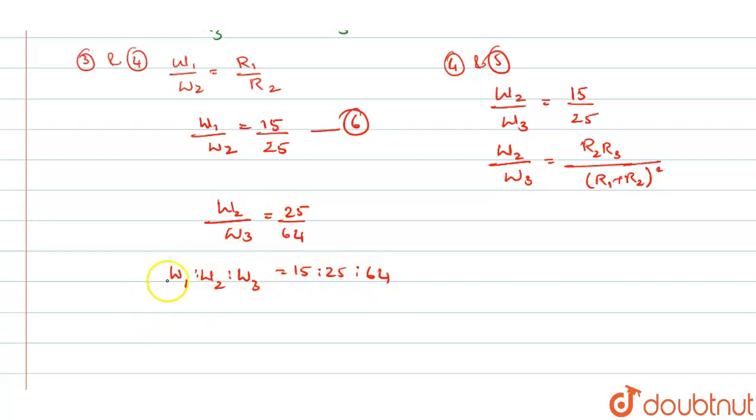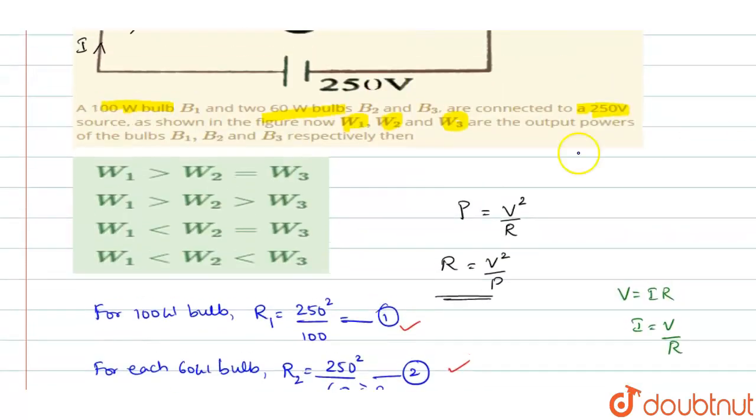When you see to these values, you can identify which is lesser, which is greater. You can see that W1 will be less than W2 will be less than W3. This is the relation you have. And see to the choices you have W1 less than W2 less than W3, option D is the right answer.